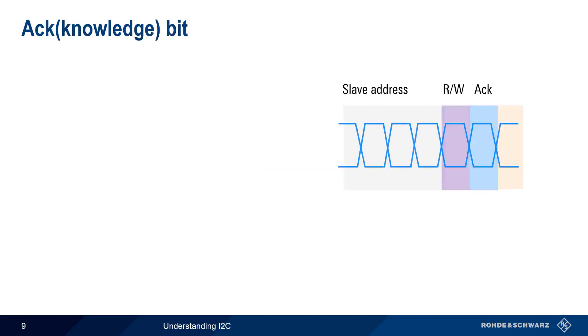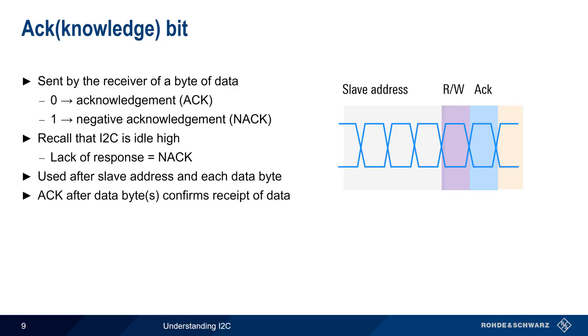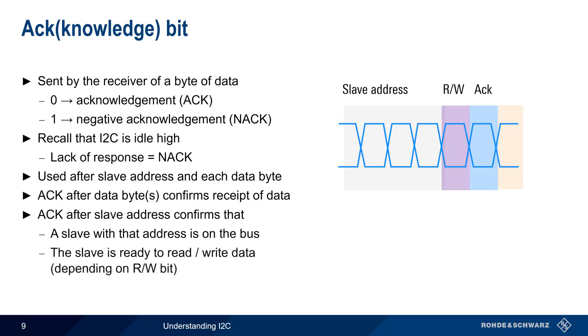The acknowledge or ACK bit is sent by the receiver each time a byte of data is received. 0 is an acknowledgement and 1 is a negative acknowledgement or a NACK. Recall that the I2C bus is idle high. So if the receiver doesn't actively respond by pulling the line low, this will be interpreted as a NACK. Every slave address or data byte is followed by an ACK bit. An ACK bit following a data byte is sent by the receiver to confirm correct reception of the data. An ACK following a slave address is sent by the addressed slave to indicate that it's both present on the bus and that it's ready to read or write data, depending on the state of the preceding read-write bit.